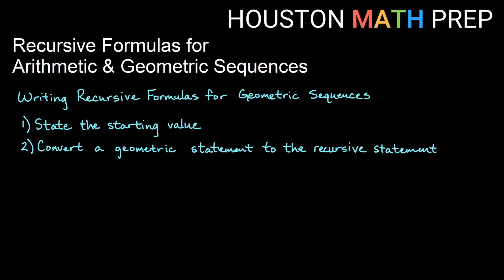For geometric sequences, it's the exact same thing. We state the starting value and we have some sort of a common ratio that is repeatedly occurring and we just simply convert a statement that sounds geometric into a formula for our recursive step.